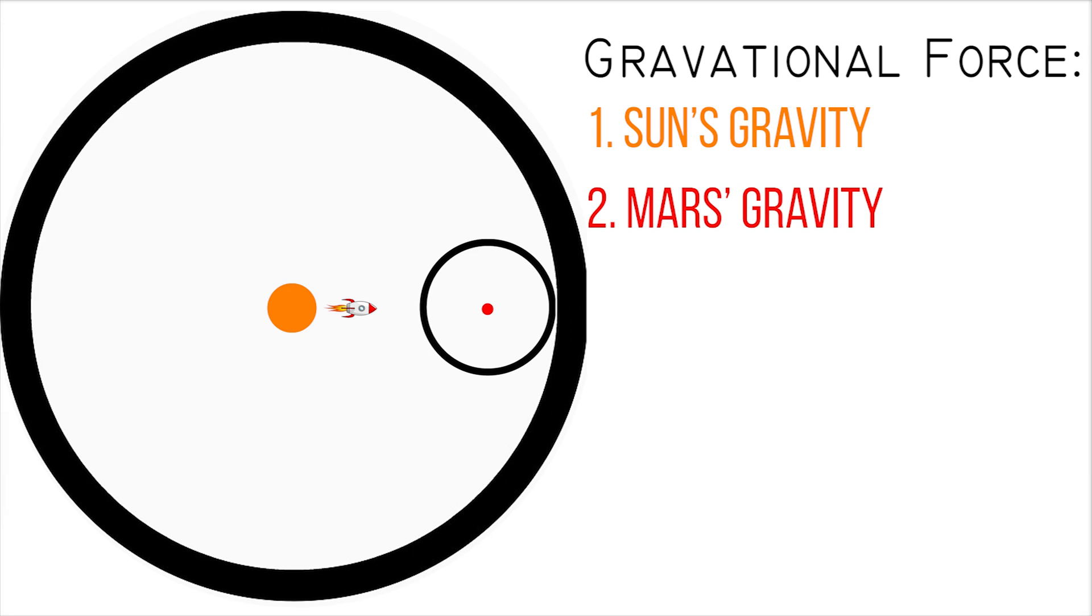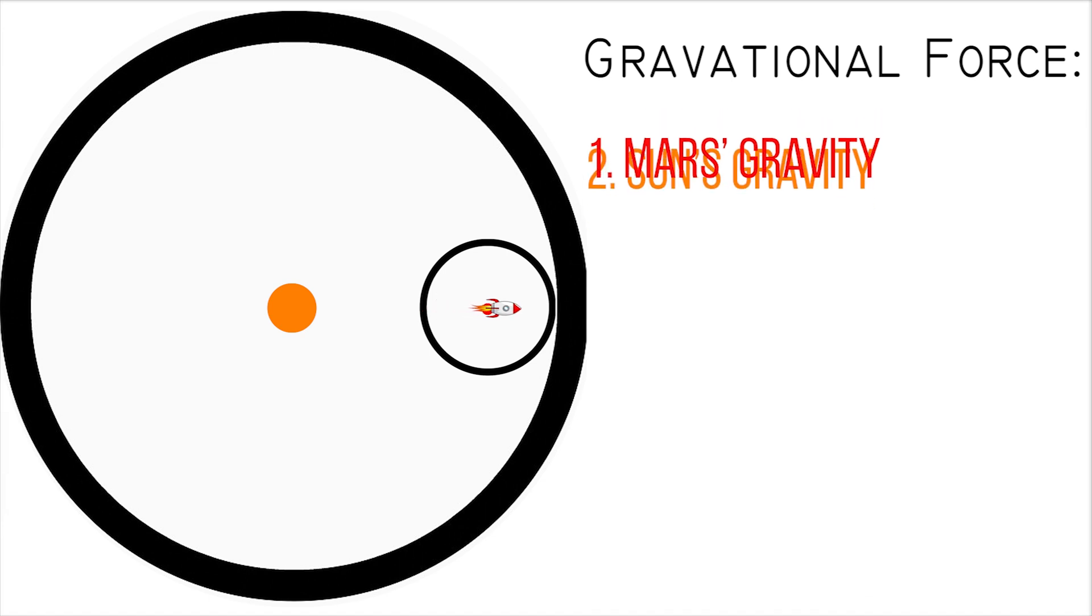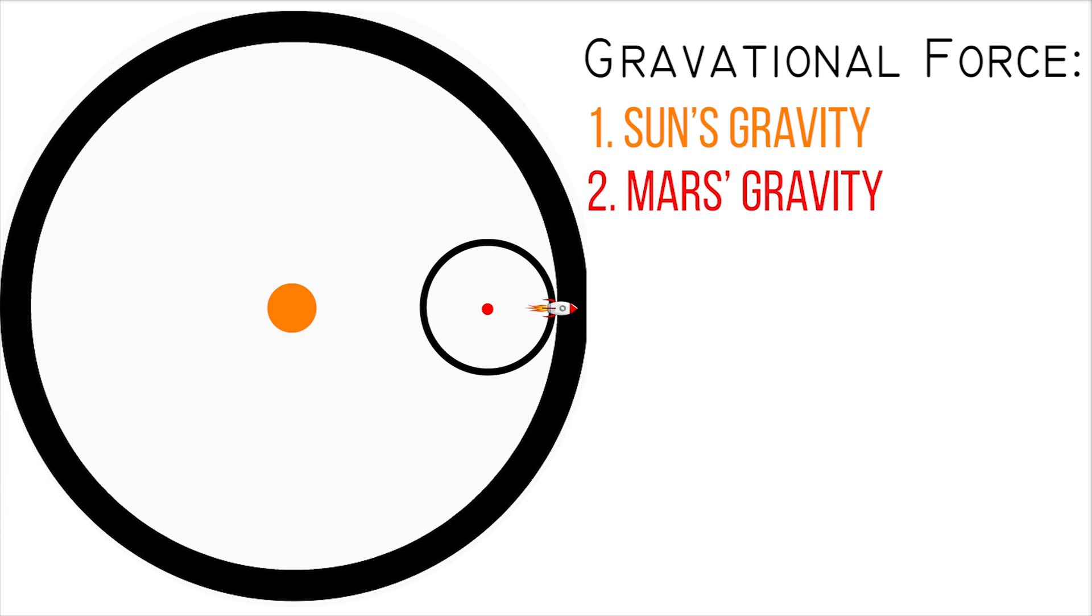A way to generalize this would be that the spacecraft actually slows down enough to be influenced by Mars' gravity primarily, and since Mars is orbiting the sun, the sun's gravity secondarily, whereas the ballistic capture is actually influenced by the sun's gravity primarily, and Mars' gravity secondarily.